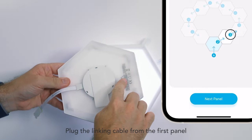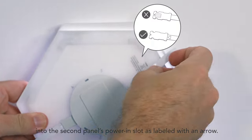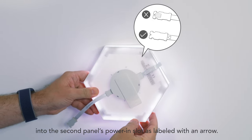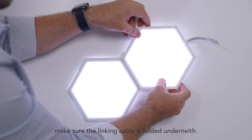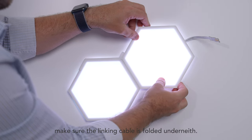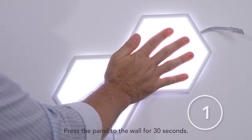Plug the linking cable from the first panel into the second panel's power-in slot with arrow. Remove the back adhesive covering, and as you place the panel, make sure the linking cable is folded underneath. Press the panel to the wall for 30 seconds.